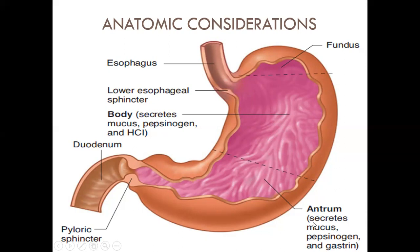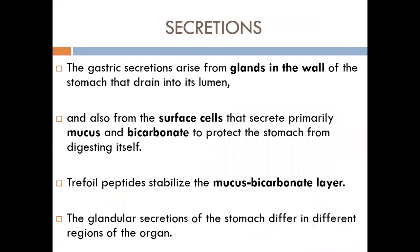Gastric secretions arise from glands in the wall of the stomach draining into the lumen, and from surface cells that secrete primarily mucus and bicarbonates to protect the stomach from digesting itself. The mucus-bicarbonate layer protects the stomach because it produces a lot of hydrochloric acid. Mucosal cells don't survive well in acidic environments, so they are covered by mucus and produce bicarbonate.